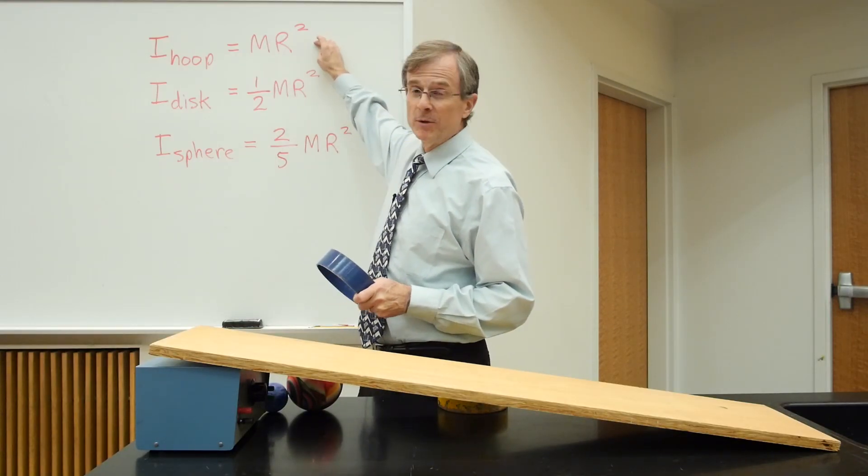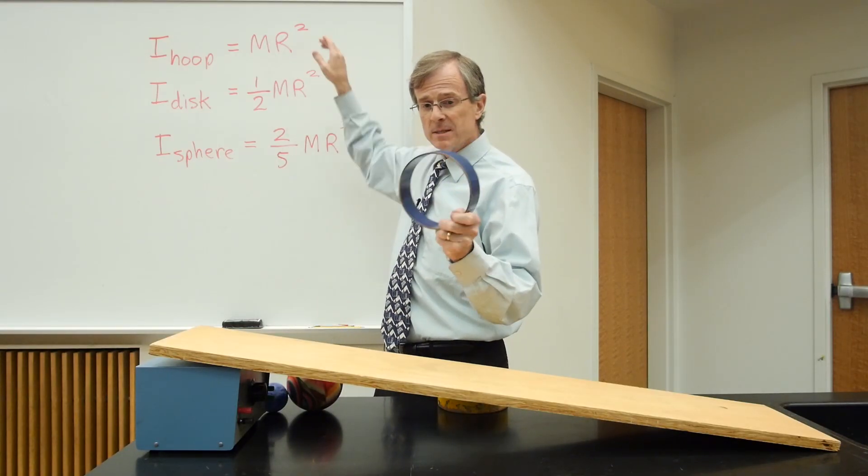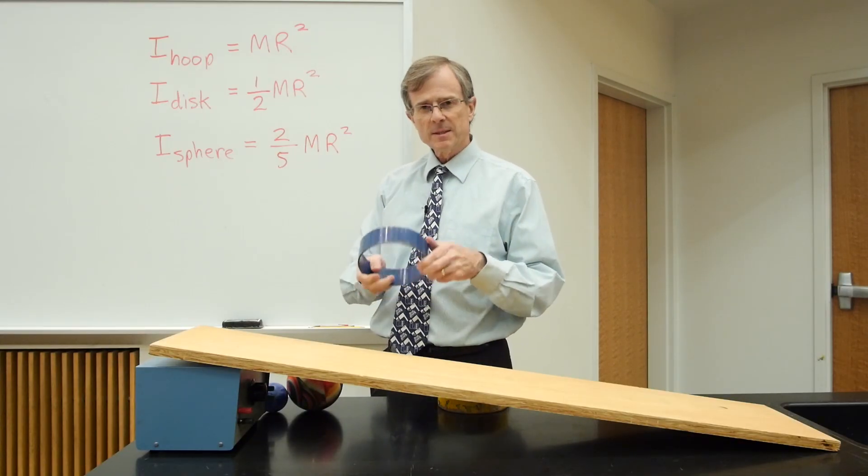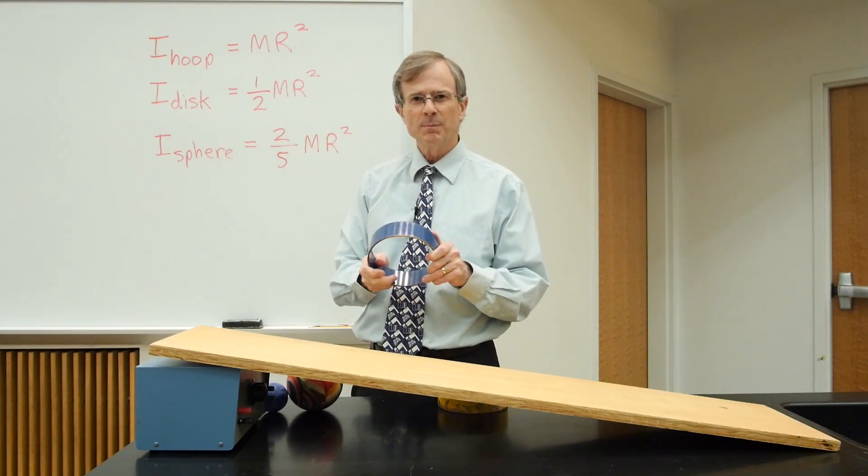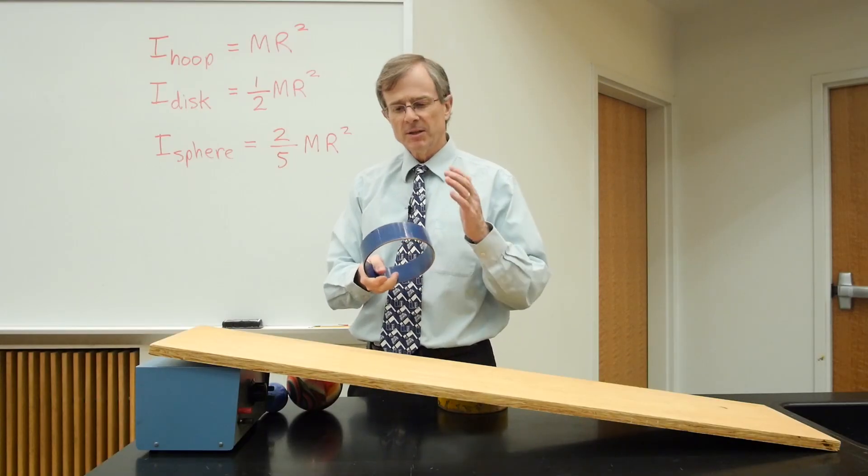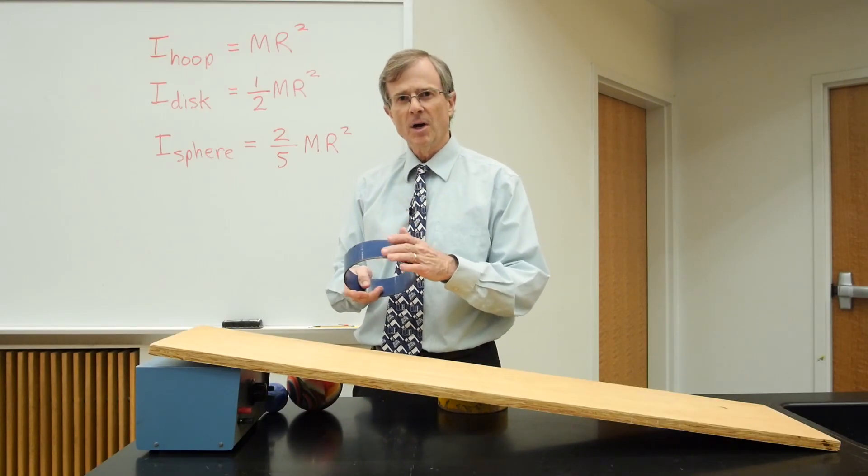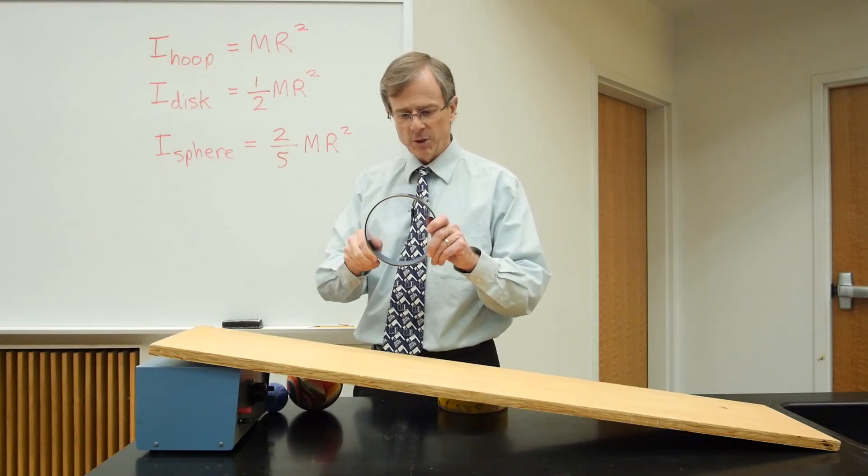And its moment of inertia is its mass times its radius squared. That's the highest possible moment of inertia that you can get for an object of mass M and radius R—the moment of inertia for a hoop.